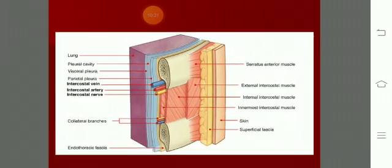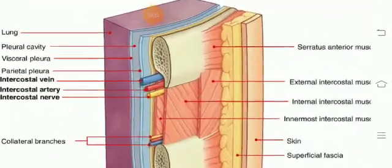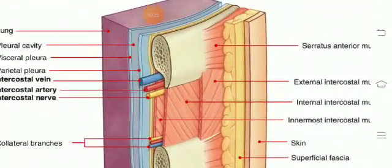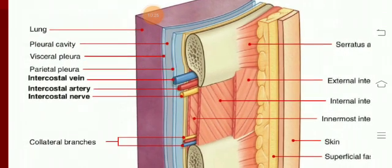In the costal groove you can very clearly see the structures: first vein, artery, nerve - the VAN arrangement.